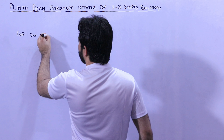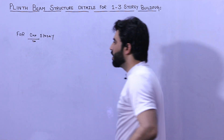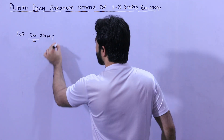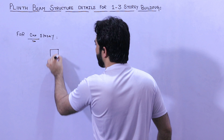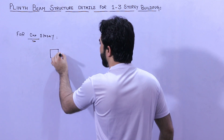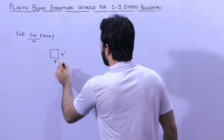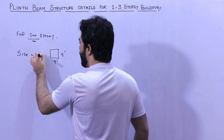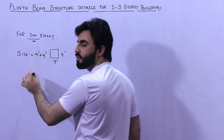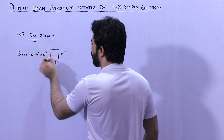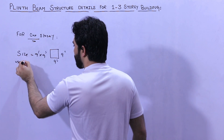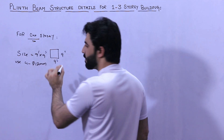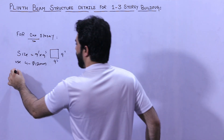The first one is for one story plinth beam size and steel reinforcement for a normal residential building. The size of plinth beam should not be more than nine inches by nine inches for one story. Use four numbers of steel rods and the diameter should not be less than 12 millimeter.